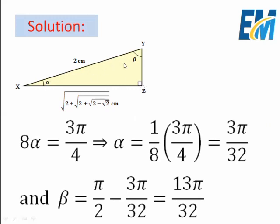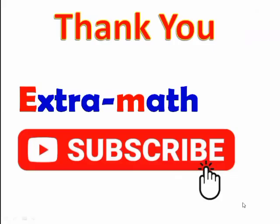Since angle Z is 90°, we have α + β = π/2. Therefore β = π/2 − α = π/2 − 3π/32 = 16π/32 − 3π/32 = 13π/32. Therefore, alpha equals 3π/32 and beta equals 13π/32.